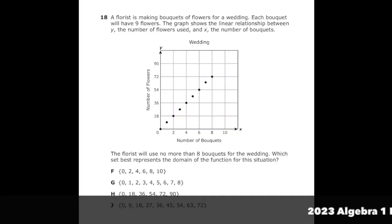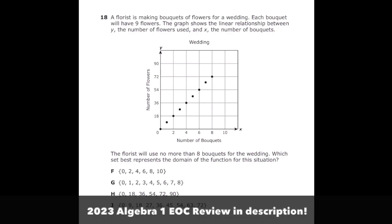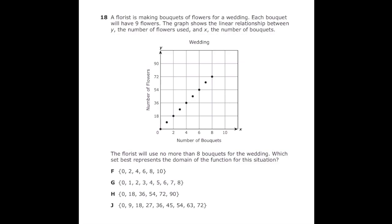This is number 18 from the 2022 Algebra 1 EOC. I notice right away that we're talking about the domain and I know that the domain is always talking about the x values. I'm going to look at my graph and I'm going to see what the x value is for each point. Once I do that I'm going to see that I have a point at 0, 1, 2, 3, all the way until I have 8. So my domain should be the numbers 0 through 8. If I look at my answer choices that's going to be letter G.